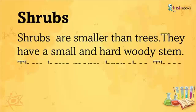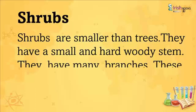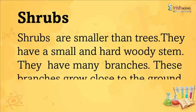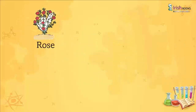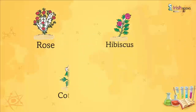Examples of trees include banyan, neem, pine and mango. Shrubs: Shrubs are smaller than trees. They have a small and hard woody stem. They have many branches and these branches grow close to the ground. Examples include rose, hibiscus, cotton and henna.